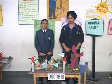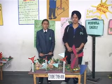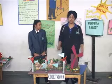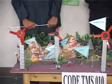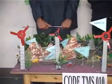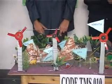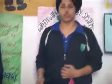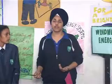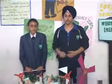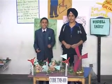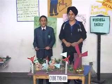A windmill used to generate electricity is known as a wind turbine. A wind turbine is a device that converts kinetic energy from the wind into mechanical energy. That mechanical energy is used to produce electricity. The devices are also called a wind charger or a wind generator. Now I will tell you about the layout of the wind turbine.